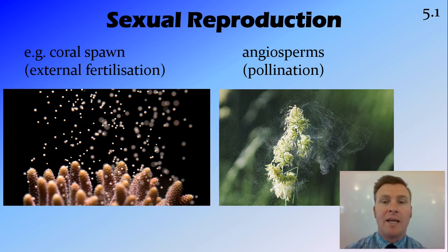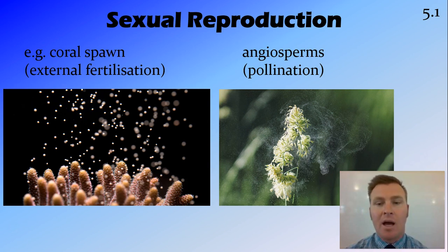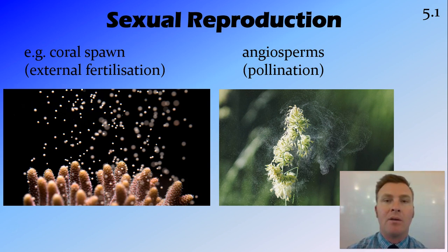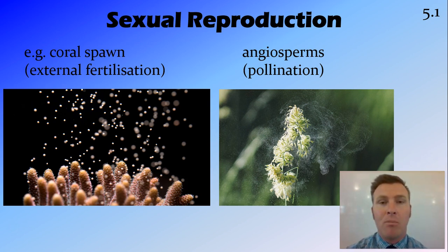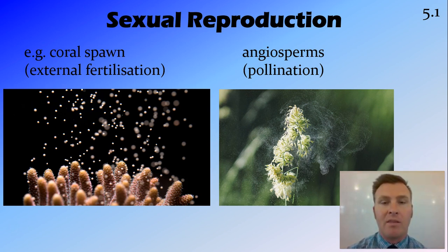Another example of sexual reproduction is in flowering plants, or angiosperms, through pollination. The pollen — being the male gamete — travels from the anther of the plant onto the stigma, the female part of the plant, and then travels down the pollen tube to pollinate the ovum.